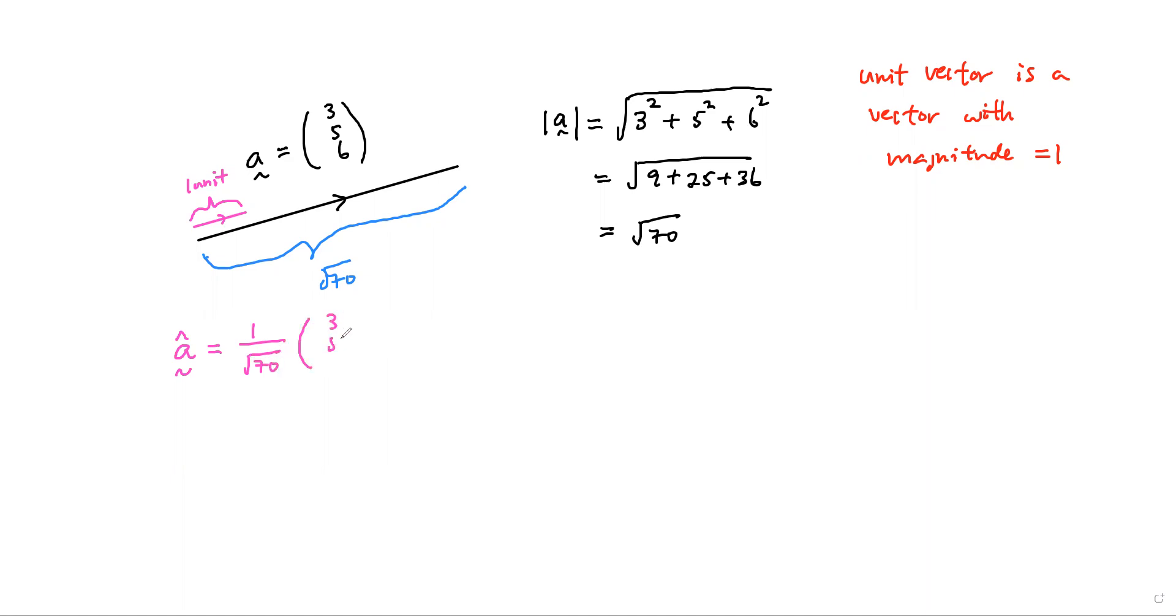So this will be 3 over square root 70, 5 over square root 70, and 6 over square root 70.